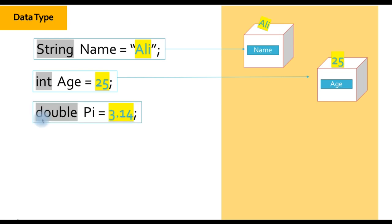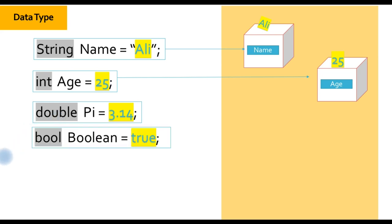We cannot store a decimal point value like 2.5 in an int. If you want to store something with a decimal point, we have another variable type. We can create a 'double' data type — double, name is 'pi', value is 3.14. Any kind of decimal point value can be stored in a double, so if you need it, you can use double.